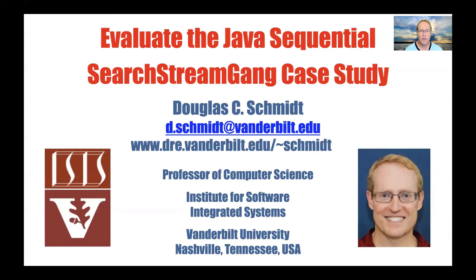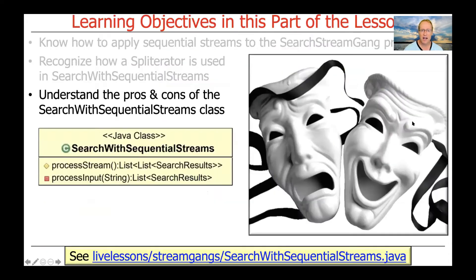At this point, we've gone through an overview of the various hook methods and helper methods that are part of the Search Stream Gang case study. What I'd like to do is evaluate it — look at the pros and cons of this particular way of implementing the code. We'll start first by understanding the pros and cons of the Search with Sequential Streams class.